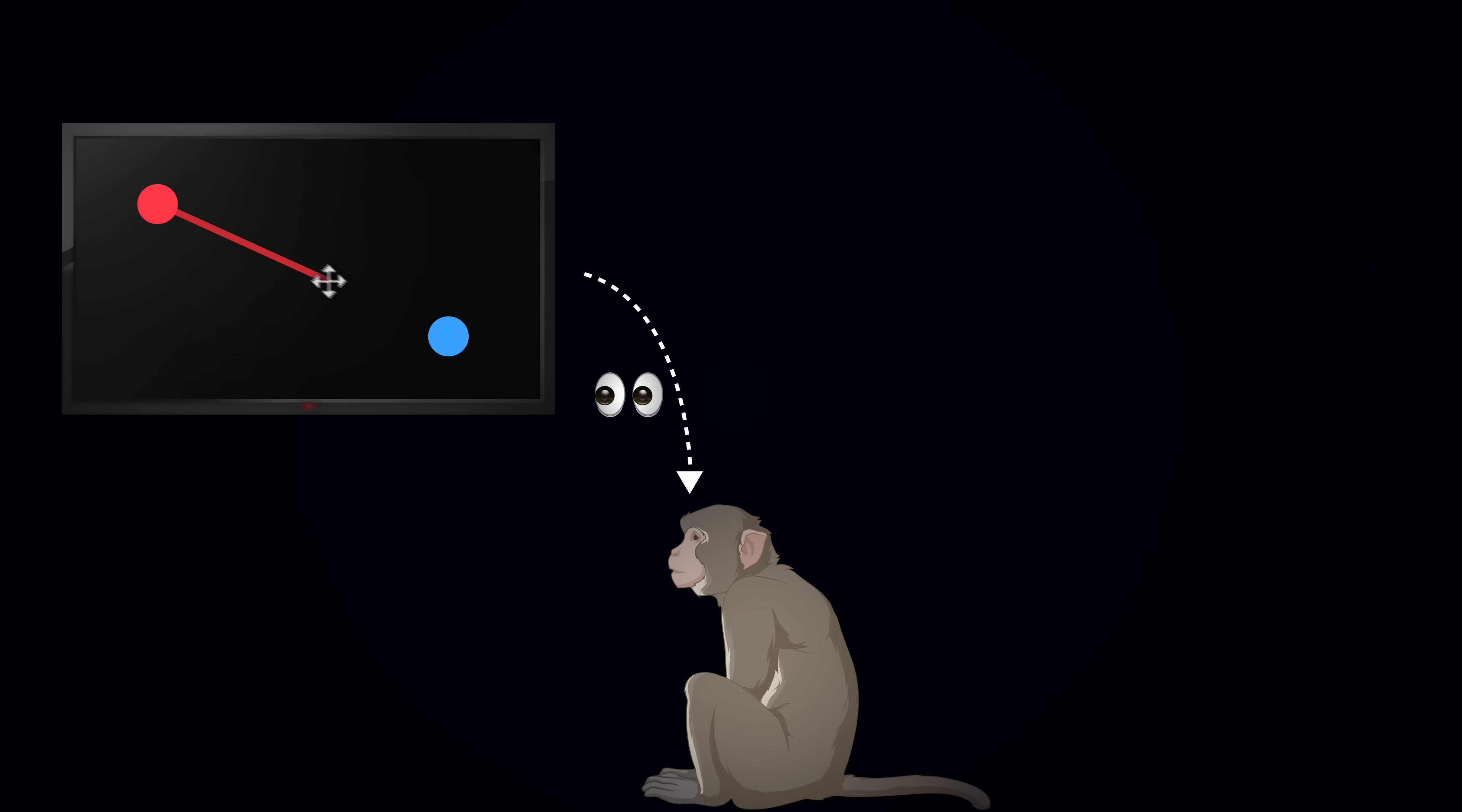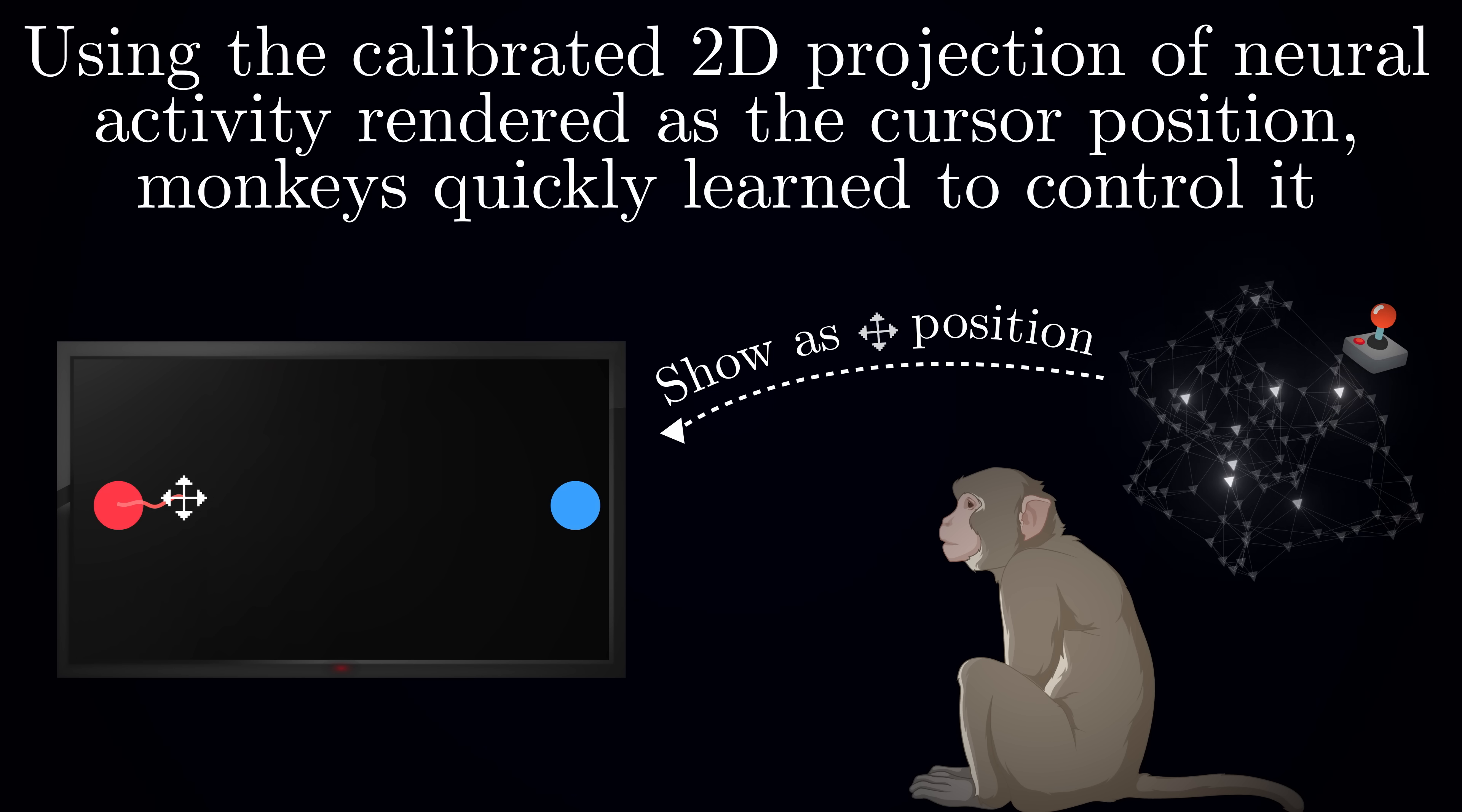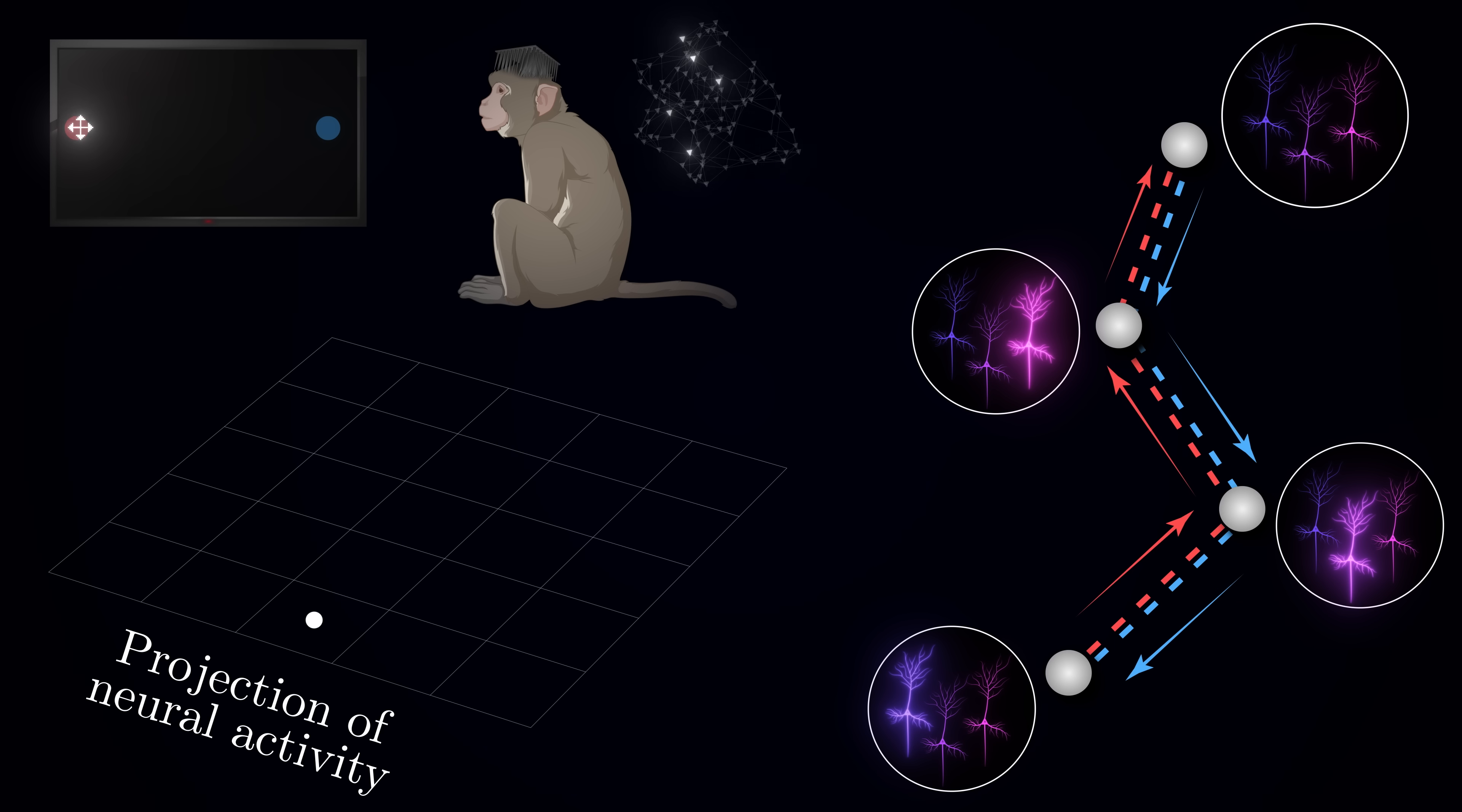The experimenters began by finding an intuitive mapping during a calibration session. They had the monkeys watch a cursor move on its own and recorded their neural activity. This revealed a specific projection, the so-called movement intention view, where the neural trajectories looked remarkably similar to the cursor's paths on the screen. When the researchers turned on the brain computer interface with this mapping, the monkeys quickly learned to control the cursor, moving it smoothly between the targets. At first glance, the overlapping cursor trajectories for leftward and rightward movements might suggest that neural activity is indeed quite flexible. After all, if we see the same path being traced in opposite directions, maybe we could just play the same neural tape in any direction.